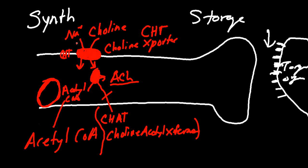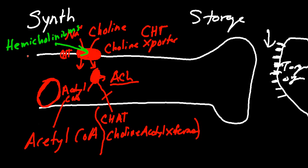So we just talked about the synthesis, storage, release, and degradation of acetylcholine. Now let's talk about drugs and how they interact. The CHT transporter can be inhibited by hemicholiniums. Hemicholiniums will inhibit this transporter, and if you can't get the choline into the cell, you can't synthesize acetylcholine.